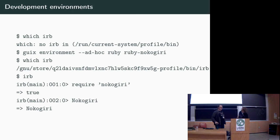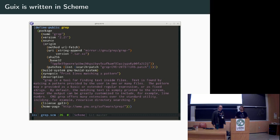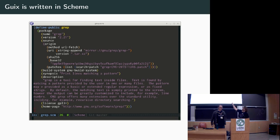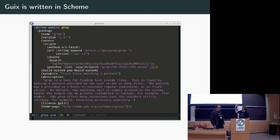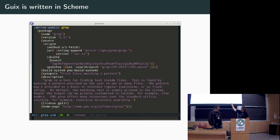Guix is written in Scheme. Is anyone familiar with Scheme or Lisp in general? Lots of parentheses. This is the real package definition for grep — it's very small, mostly metadata. We have a build system — the GNU build system — that's the abstract thing that says you want to do configure, make, make install. We have a pretty expressive and terse language for representing these packages. And these aren't binaries — these are recipes for how to build them from source yourself, automatically.